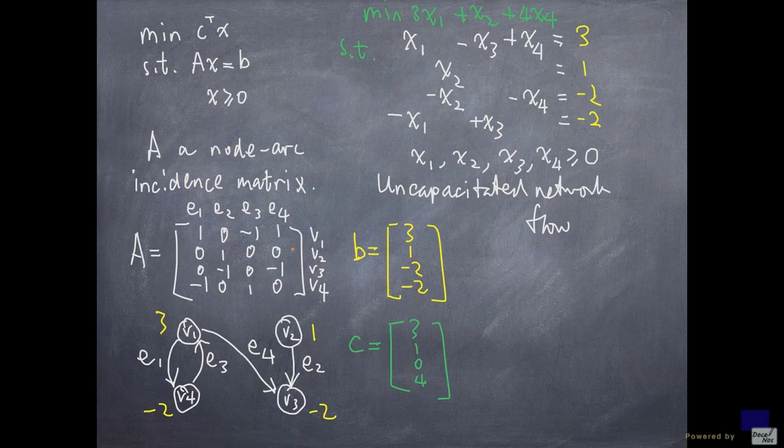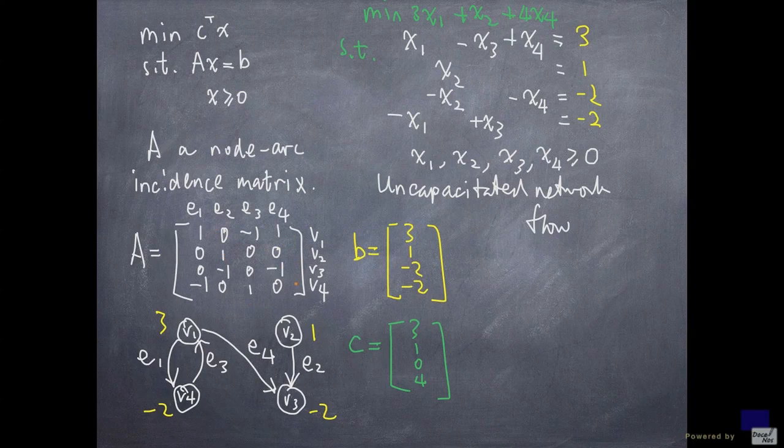For example, if I delete the second row here, the remaining three rows are linearly independent. Or if I choose to delete the fourth row, the first three rows are going to be linearly independent.